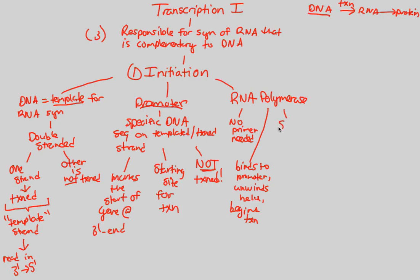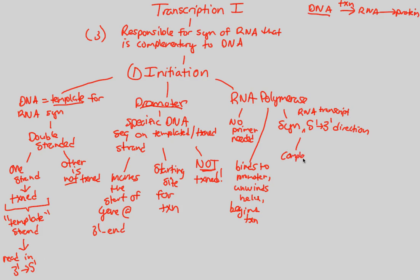A key idea about RNA polymerase is that it synthesizes in the 5' to 3' direction. So while the DNA template strand is read in the 3' to 5' direction, RNA polymerase works and synthesizes the RNA transcript in the 5' to 3' direction. This means it creates a complementary and anti-parallel RNA transcript strand.